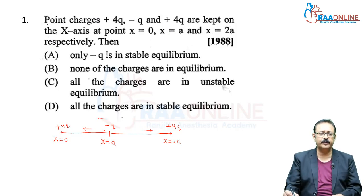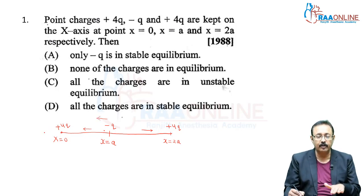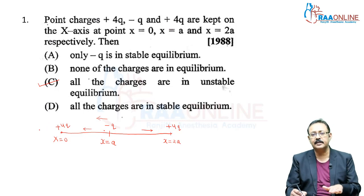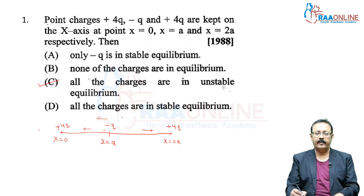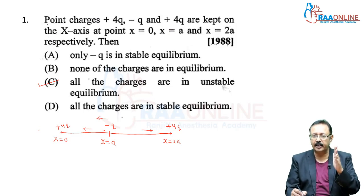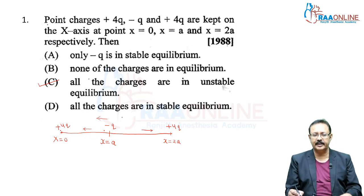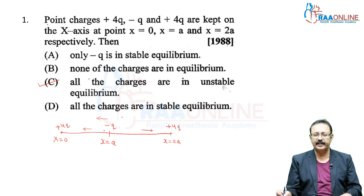Since the balance is destroyed after a small displacement, -Q starts moving further away. This means the equilibrium was unstable. If after pushing it came back, the equilibrium would be stable — but that is not happening here. So the answer is that all charges are in unstable equilibrium.